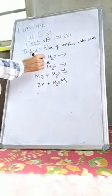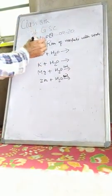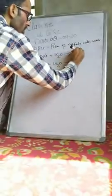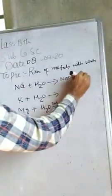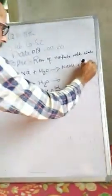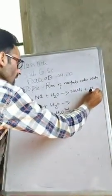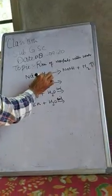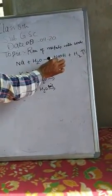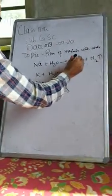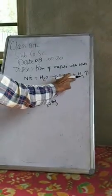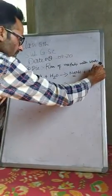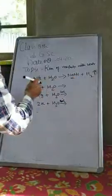When sodium reacts with water, sodium hydroxide plus hydrogen gas is produced. Sodium hydroxide is a base. This means hydrogen gas is produced from the reaction of sodium with water.